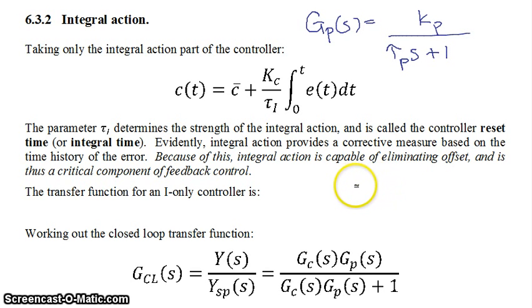Now the transfer function for an integral-only action control—now of course you will never actually use a controller that's integral only—but the transfer function of just the integral part is equal to kc over tau i times s, because the Laplace transform of the integral would be 1 over s. So you have kc over tau i times 1 over s, and then you divide e of t to the other side to get your transfer function.